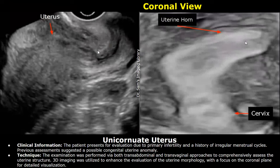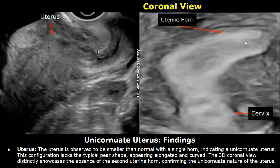Now we have a report of unicornuate uterus. Clinical information: the patient presents for evaluation due to primary infertility and a history of irregular menstrual cycles. Previous assessments suggested a possible congenital uterine anomaly. These are the findings. Uterus: the uterus is observed to be smaller than normal, with a single horn, indicating a unicornuate uterus. This configuration lacks the typical pear shape, appearing elongated and curved.